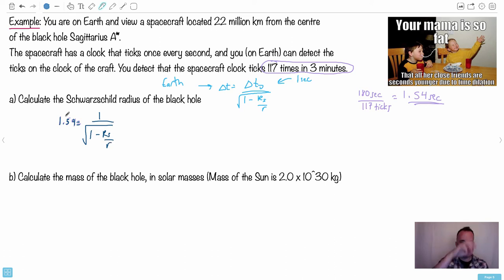We can take our square root, put it up to the top, and we can take the 1.54 and move it. So now we have 1 minus Rs over R, square root of course, equals 1 over 1.54. Now I can square both sides. That's going to get rid of the square root. So let's do 1 over the answer and then do squared. I end up with 1 minus Rs over R is going to equal about 0.4225. Now I can move the Rs over R to the other side. So I do Rs over R equals 1 minus that answer, and I end up with something like 0.5775.